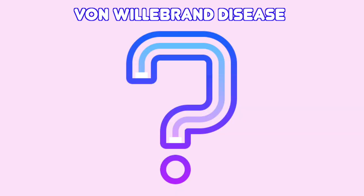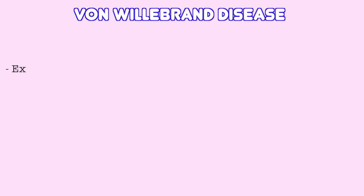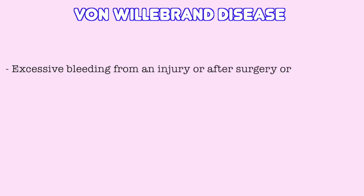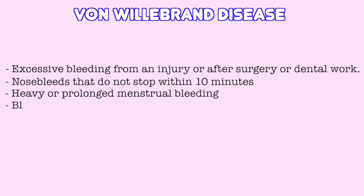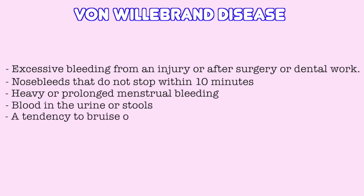How can we know if we have this disease? There is a list of symptoms: excessive bleeding from an injury or after surgery or dental work; nosebleeds that don't stop within 10 minutes; heavy or prolonged menstrual bleeding; blood in the urine or stools; a tendency to bruise or get lumpy bruises.